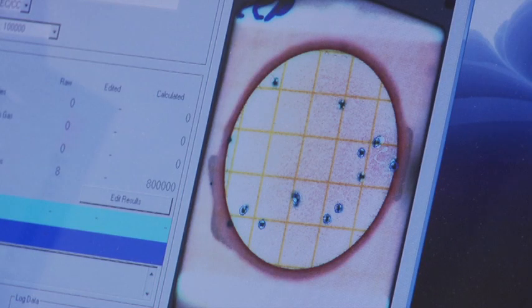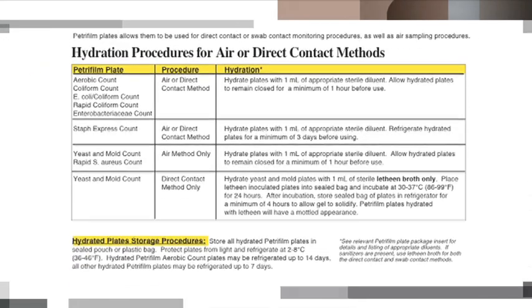In addition to product sampling, 3M's full line of PetriFilm plates can also be used for environmental testing.